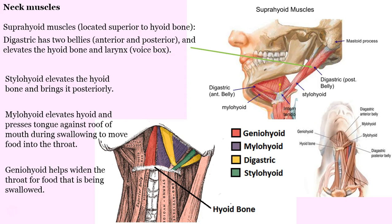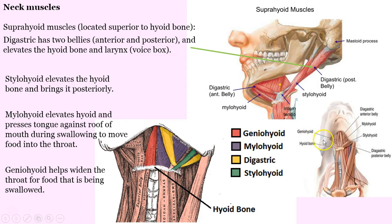The geniohyoid — let's look at the color diagram here. That's going to be in orange. That helps widen the throat, so it helps us with swallowing food.